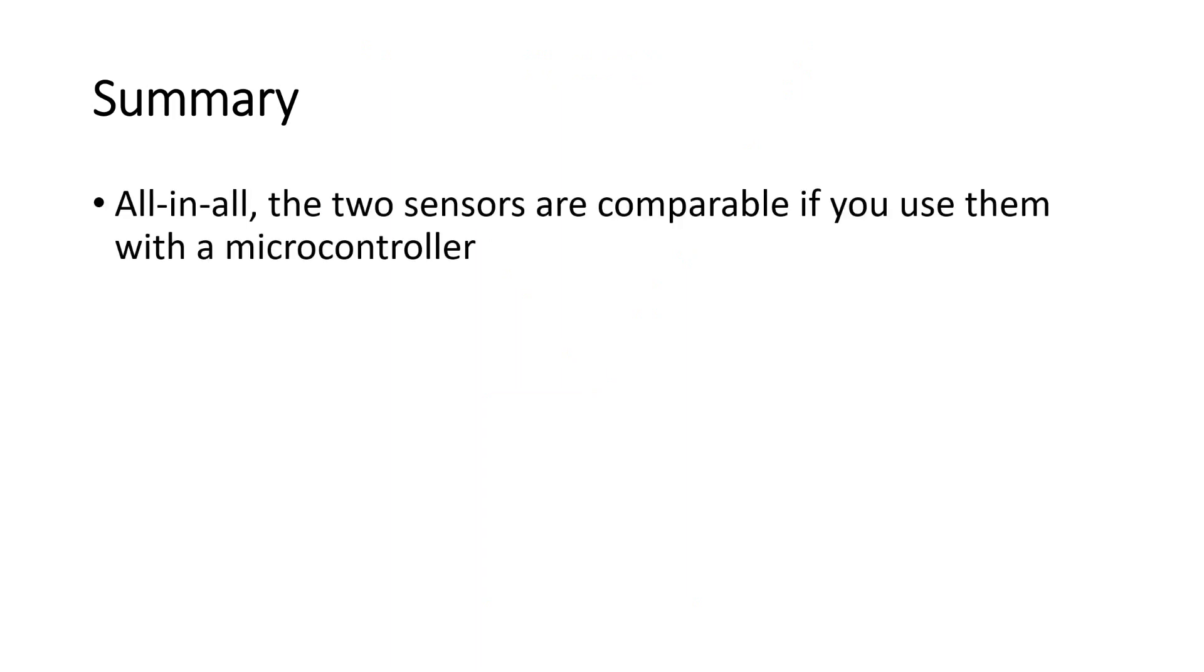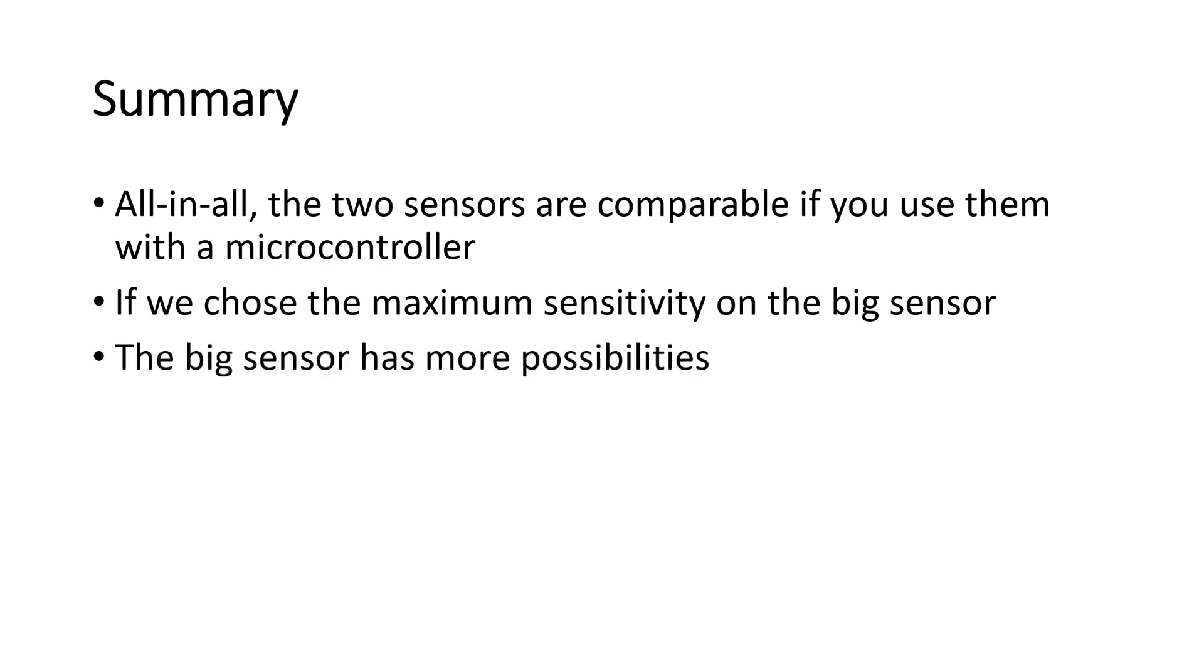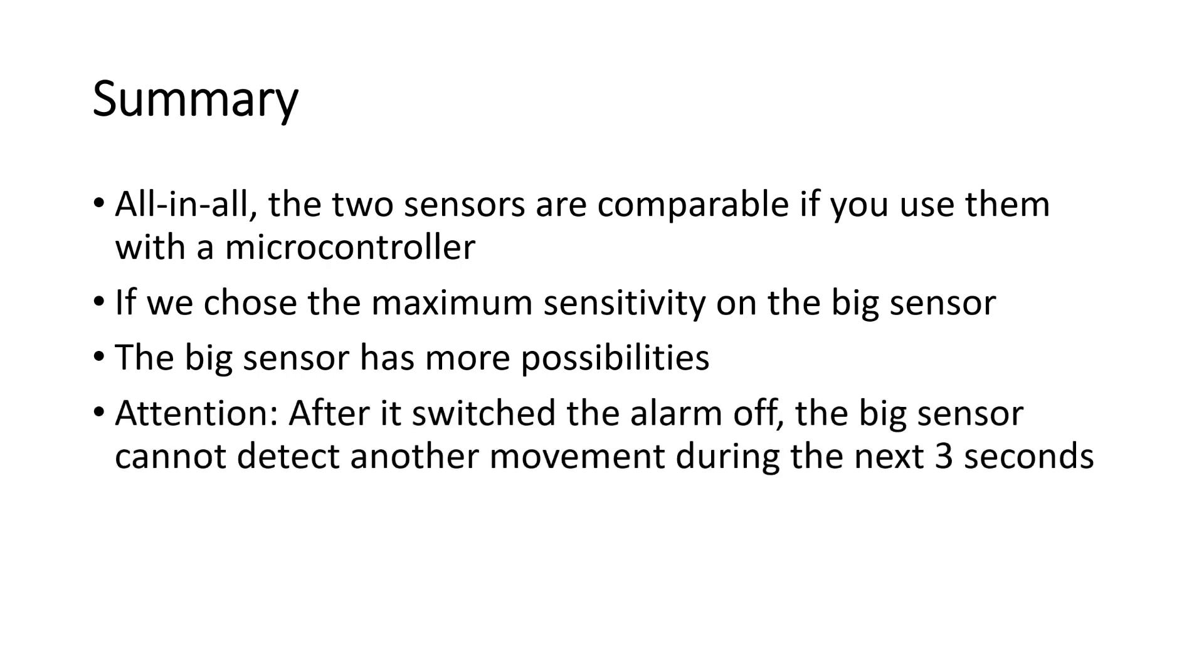All in all, the two sensors are comparable if you use them with your microcontroller and if you choose the maximum sensitivity on the big sensor. The big sensor, however, has more possibilities. For example, you can also connect an LDR to achieve that it only switches the light on if it is dark. But it has also another difference. After it switched the alarm off, it cannot detect another movement during the next 3 seconds.